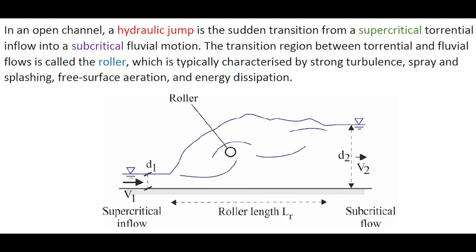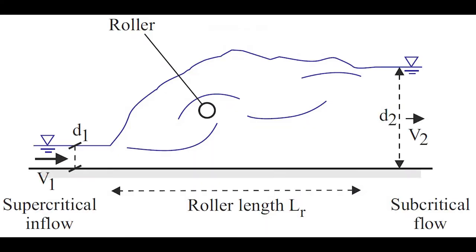In an open channel, a hydraulic jump is a sudden transition from a supercritical torrential flow into a subcritical fluvial motion. The transition region between torrential and fluvial flow is called the roller. It is typically characterized by strong turbulence, spray and splashing, free surface aeration and energy dissipation.